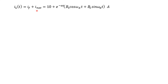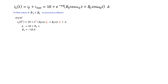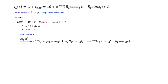Plugging in the value of I_F, our equation takes the form with unknowns B1 and B2 — the other values (alpha, ω_d) are already known. To find B1 and B2, at t equal to 0 we plug into the equation: i_L(0) equals 10 + e^0·(B1·cos(0) + B2·sin(0)). Since sin(0) = 0 and i_L(0) = 0, we get B1 equal to −10 A.